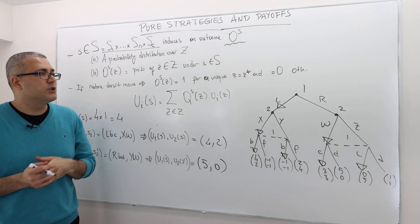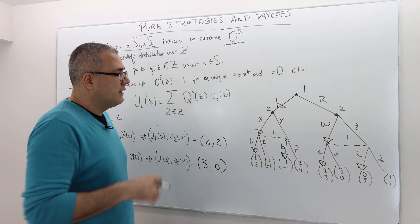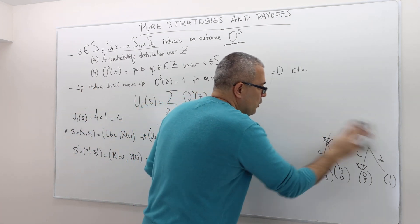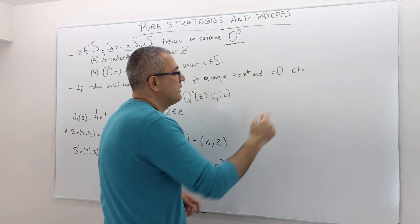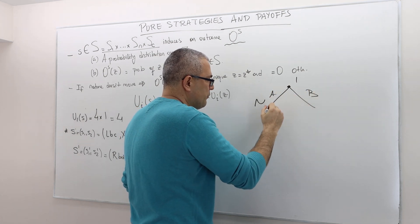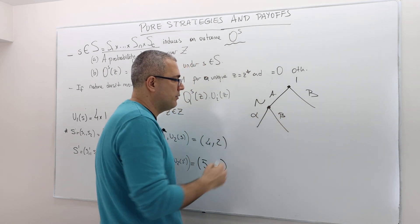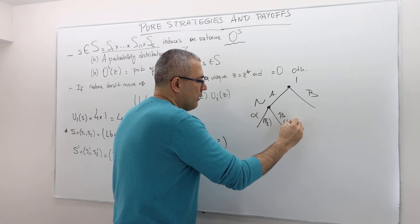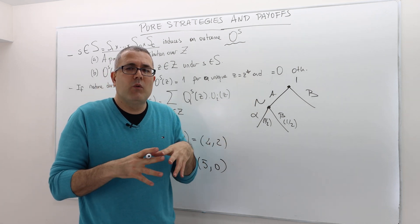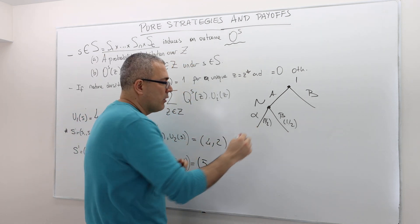What if nature is also making a move? Here is a simple example: player one moves A or B. If player one plays A, nature moves and chooses alpha or beta, each with one-half probability — like somebody tossing a coin. One branch ends the game immediately.